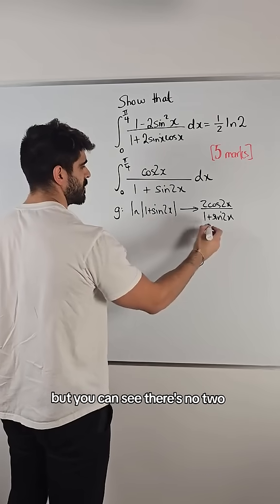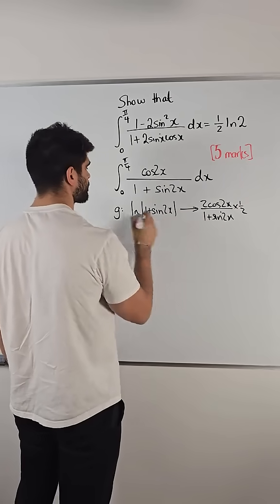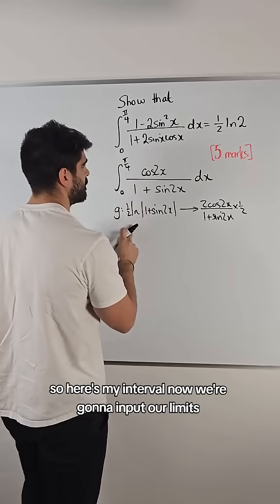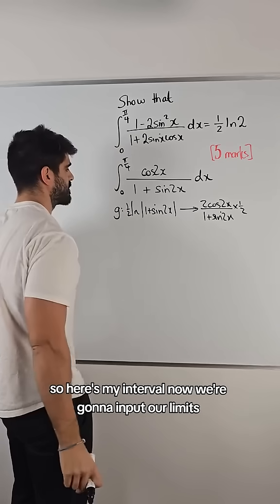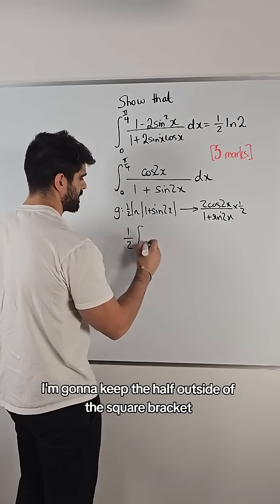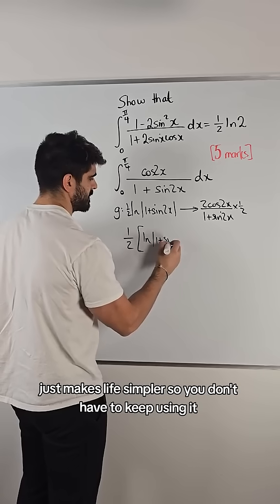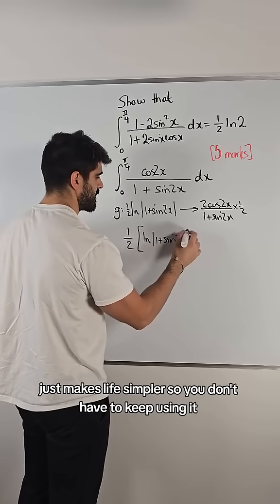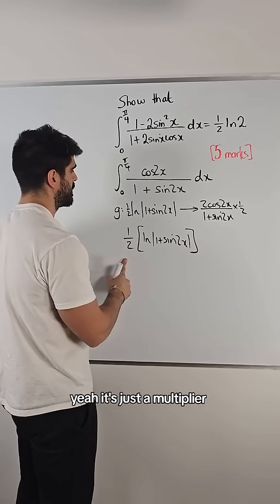But you can see there's no 2, so we just half both sides. So, here's my integral. Now, we're going to input our limits. Now, we use a square bracket, right? I'm going to keep the half outside of the squared bracket. It just makes life simpler, so you don't have to keep using it. Yeah, it's just a multiplier.